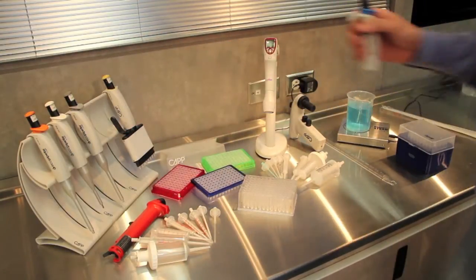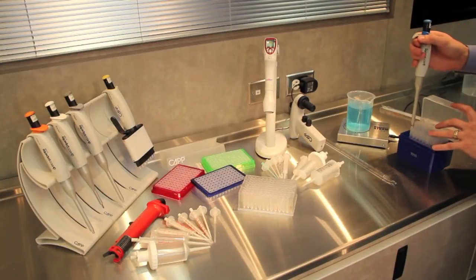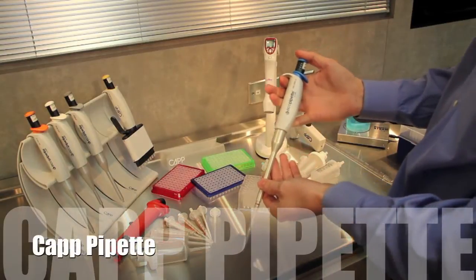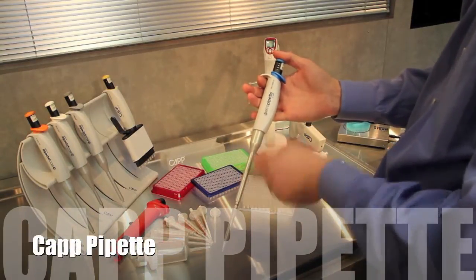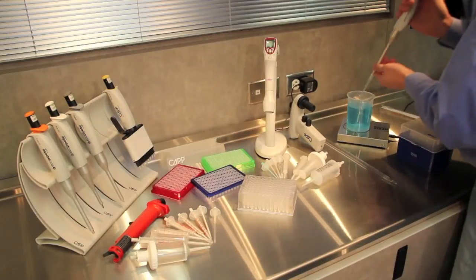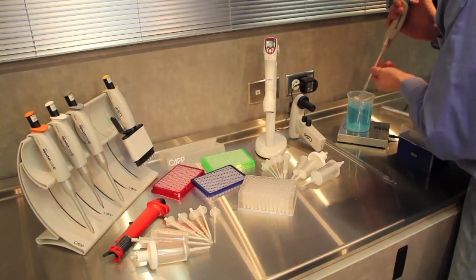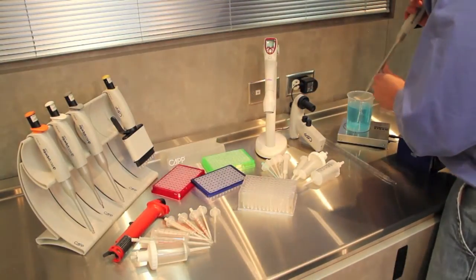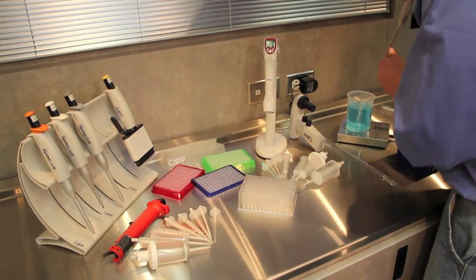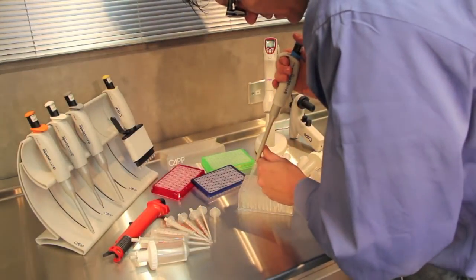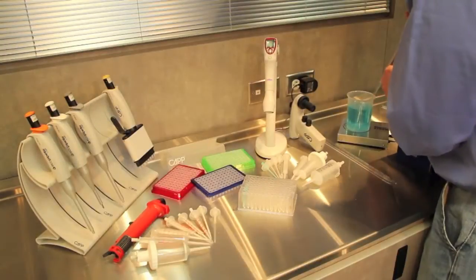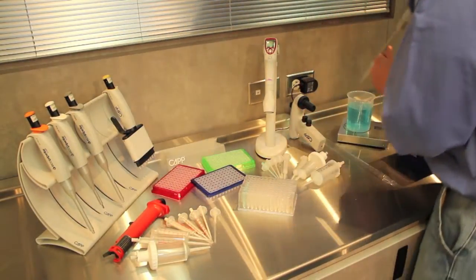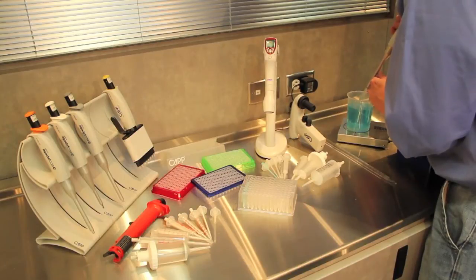The first one we're going to use is the standard 1ml pipette, this is our Cap Eco pipette. We're going to start by aspirating up the 1ml and dispensing it into each one of the reservoirs. Now, while the pipette is very accurate, it is not very fast at putting media into a plate, so we're going to look at a couple different options that will speed this process up.